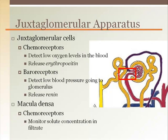The macula densa are chemoreceptors that monitor solute concentration in the distal convoluted tubule and the afferent arteriole. This double-check of the outgoing solute concentration in the distal convoluted tubule filtrate against the incoming blood solute level allows for fine-tuning of the amount of a particular solute that should be retained or released.